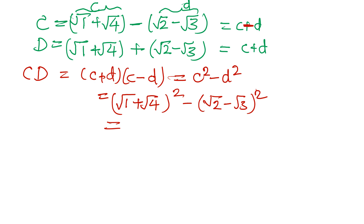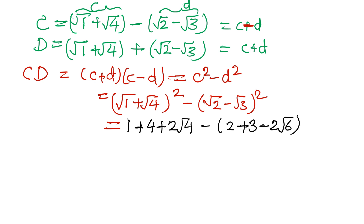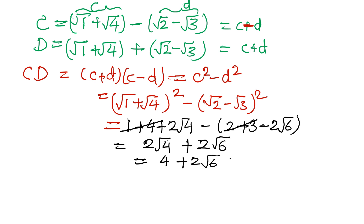Let us apply the formula. A plus B whole square is A squared plus B squared plus 2AB. So: A squared so 1, B squared so 4, 2AB so 2 times root 4. Minus: A squared so 2, B squared so 3, minus 2AB so 2 times root 6. Now again you will see 5 and 5, so what is left? 2 root 4 — and minus times minus becomes plus — 2 root 6. Root 4 is 2, so it is 4 plus 2 root 6, or if I take 2 common, then it is 2 times the quantity 2 plus root 6.